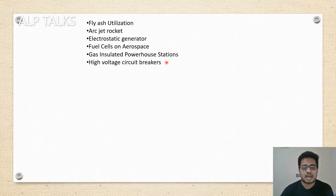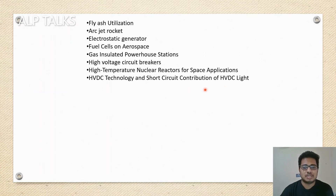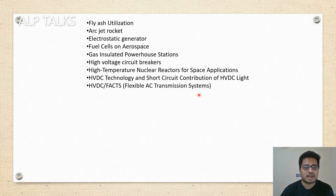High voltage circuit breakers — as we are pushing our limits and voltages to higher levels, all circuit breakers required for breaking the circuit are going to play an important role. High temperature nuclear reactors for space applications. HVDC terminal technology and short circuit contribution of HVDC light — whenever we are sending power from one place to a very far place, we use this HVDC technology. This is going to play an important role in the coming days. HVDC FACTS, flexible AC transmission systems, and hybrid distribution generator systems.